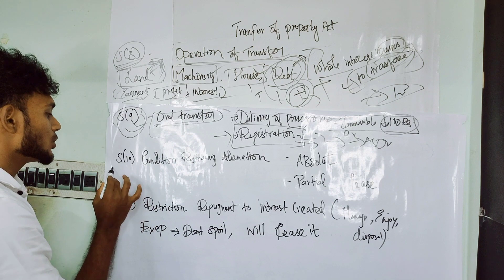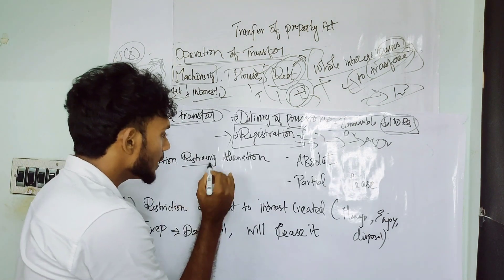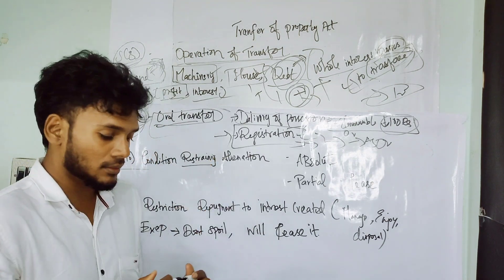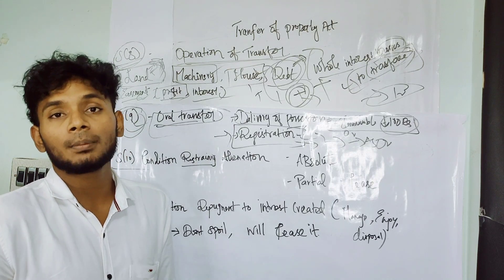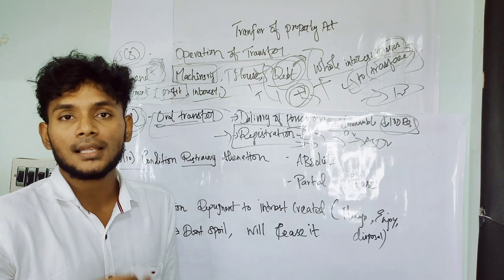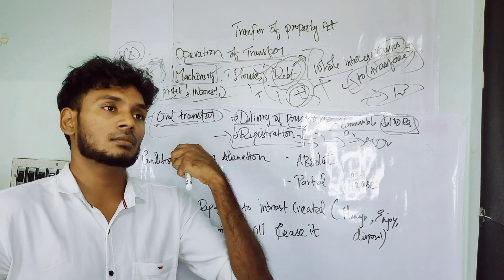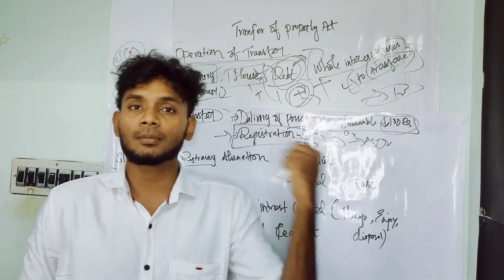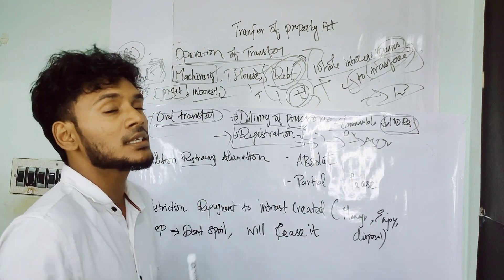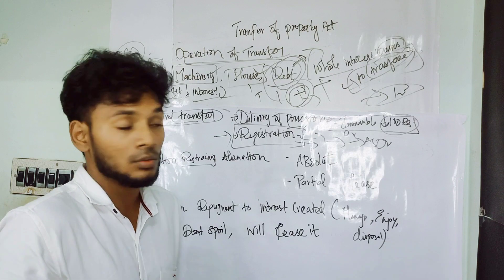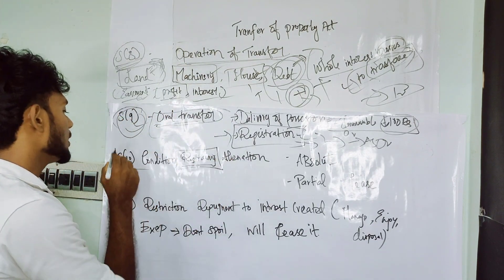Coming to Section 10 - condition restraining alienation. Suppose you have to transfer a property as absolute - absolute means you did not put any restriction or condition. Absolute transfer means no restriction is placed on the transfer.